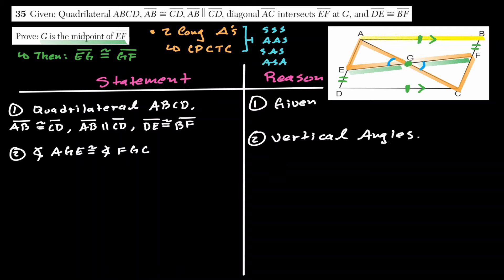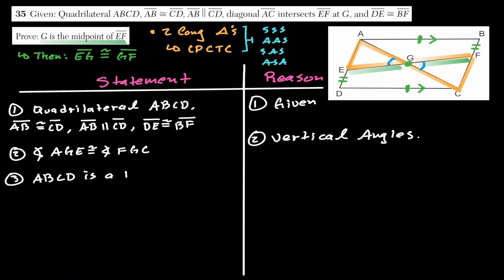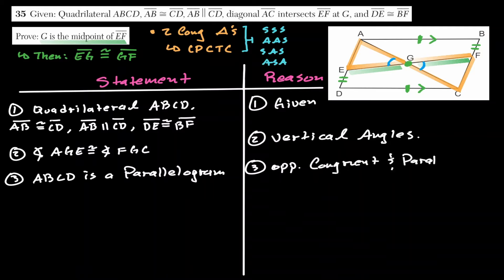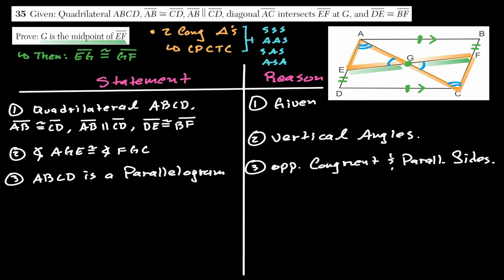Notice that quadrilateral ABCD is a parallelogram because it has a pair of opposite sides that are both congruent and parallel. We can state this as a step in our proof.